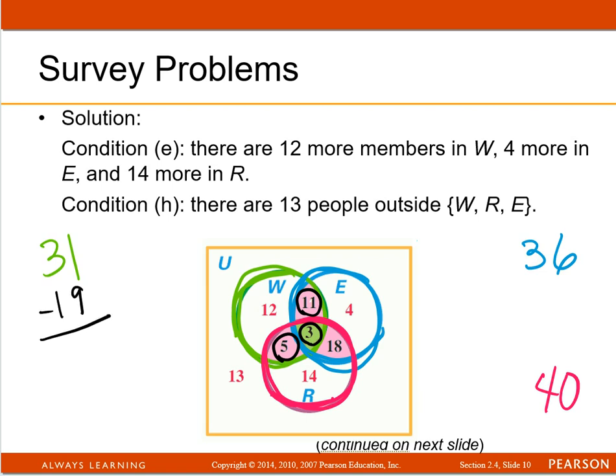If you subtract 19 from the 31, there's your 12. That's how they got this 12 right there inside that green circle. There has to be a total of 31 and you've already got 5 and 3 and 11.